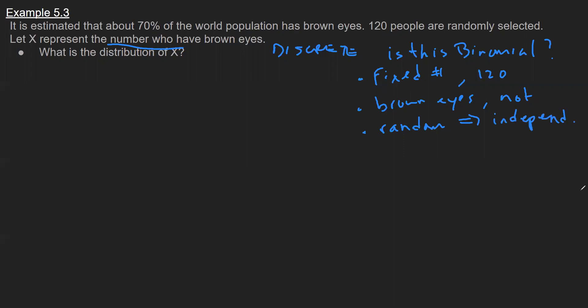And then the last one's a constant probability of success. The success is defined by what you're counting. In this problem we're counting brown eyes and we're given that this value is 70%. So we have all the criteria satisfied. I can conclude the distribution of X is binomial where n is 120 and p is 0.7.